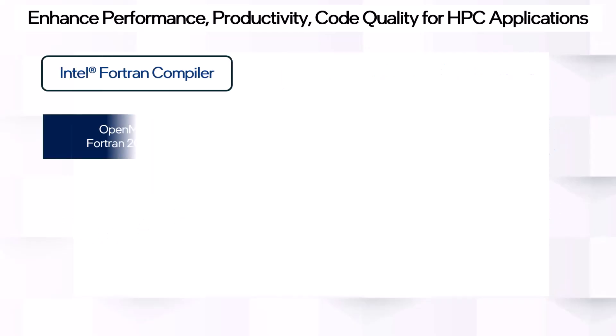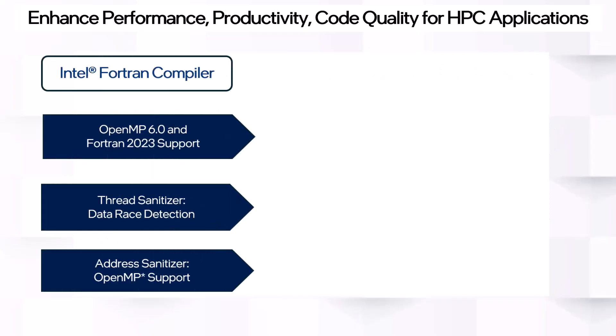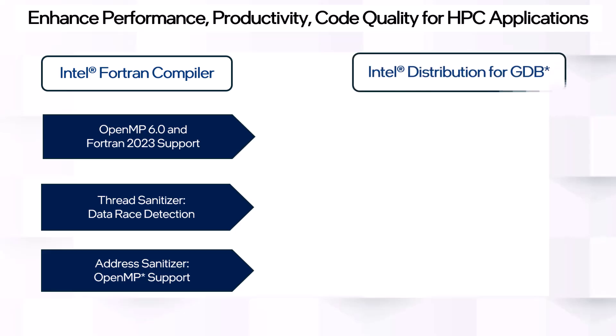The Intel Fortran compiler has extended its support for OpenMP 6.0 and Fortran 2023. It provides a thread sanitizer for data race detection, while the address sanitizer comes with an extension to support OpenMP offload code.